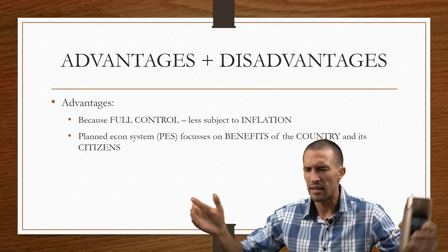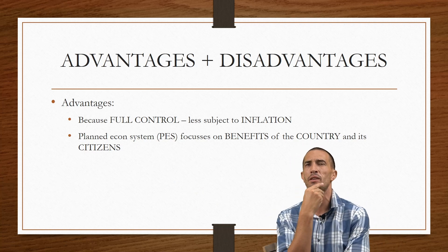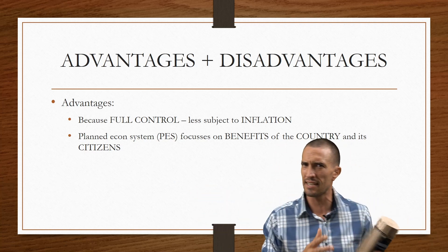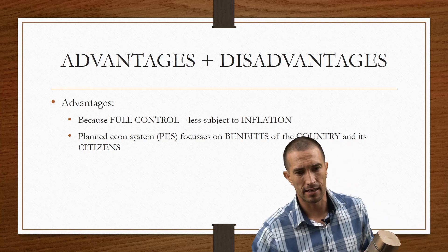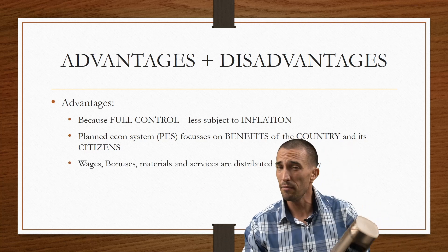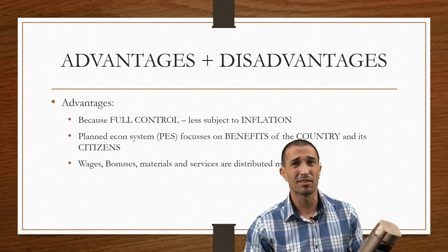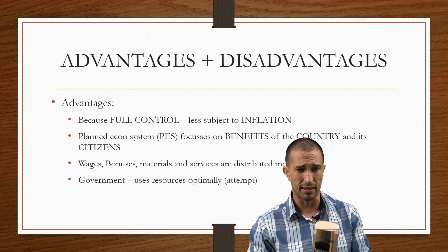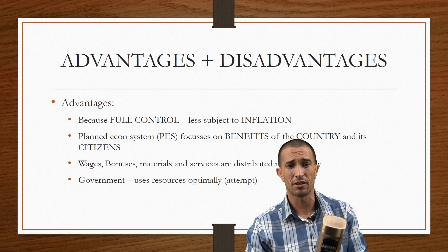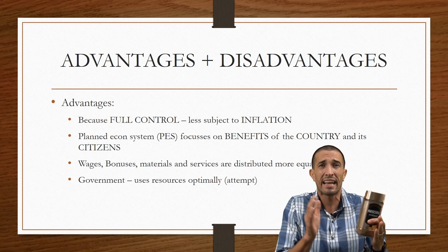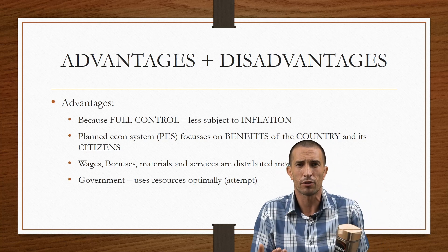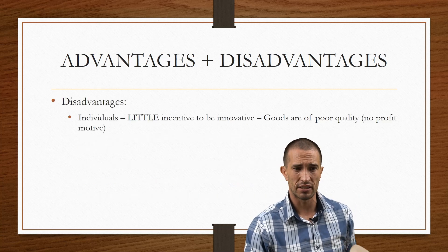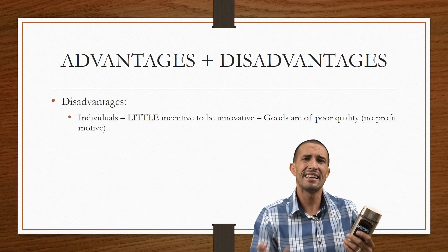Whatever you do, you get the same as the person next to you. You might think — if I'm a doctor versus a farmer, do I get the same? That is where the drawback comes in. Wages, bonuses, and materials are all shared equally and optimally. The government tries to use resources optimally because they control them, much like a business controls what it has.